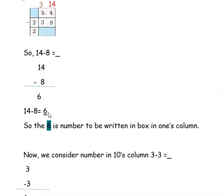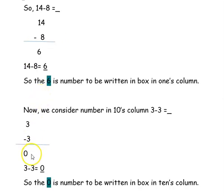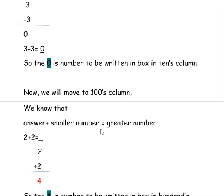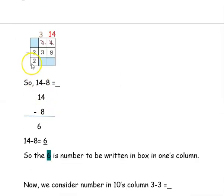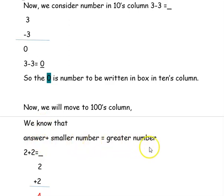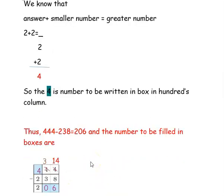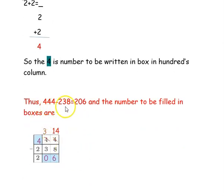Moving to the tens column: we had 4, but after borrowing 1, it becomes 3. So 3 minus 3 is 0. So 0 is the number to be written in the tens column box. In the hundreds column, the answer is 2 and the smaller number is 2, so 2 plus 2 equals 4. So 4 is the number to be written in the hundreds column box. Thus, 444 minus 238 is 206. The numbers filled in the boxes are 4 in the hundreds column, 0 in the tens column, and 6 in the ones column.